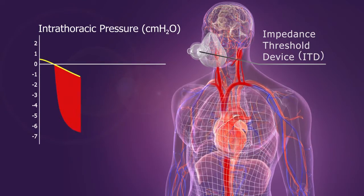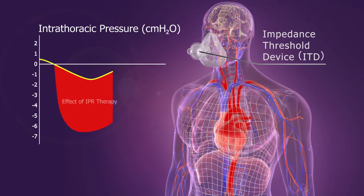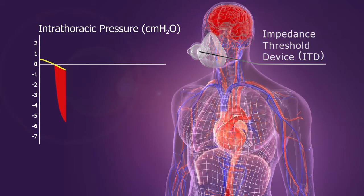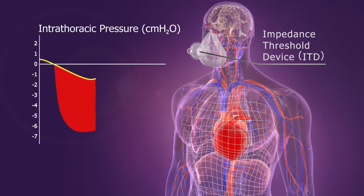This enhanced vacuum pulls more blood back to the chest and heart, enhancing preload and cardiac output. It also lowers ICP, making it easier to circulate blood to the brain.